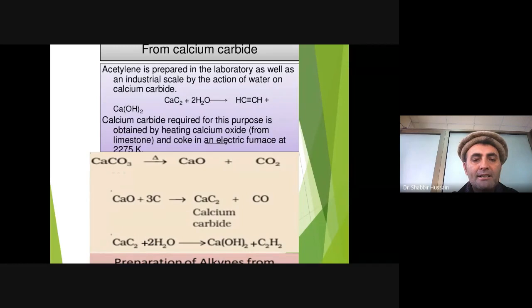The calcium carbide required for this purpose is obtained by heating calcium oxide. This calcium oxide we are getting from limestone, that is calcium carbonate. When calcium carbonate is heated at high temperature, we are getting calcium oxide and carbon dioxide. This calcium oxide is treated with carbon at high temperature to give calcium carbide.